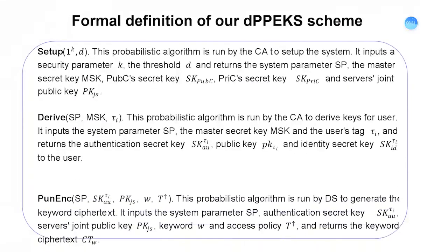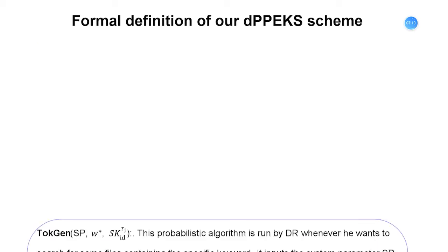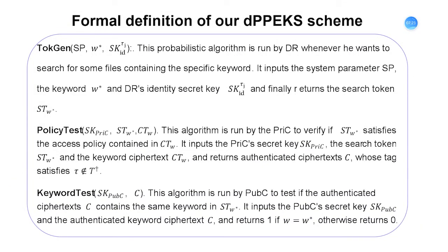We give the formal definition of our DPPKS scheme. There are six algorithms. The first is setup, run by the central authority to set up the system. The second is derive, also run by the CA to derive keys for each user. The third is puncture encryption, run by the data sender to generate the keyword ciphertext. The fourth is token generation, run by the data receiver whenever he wants to search for files containing a specific keyword. The fifth is policy test, run by the private cloud to verify if the search tokens satisfy the access policy in the ciphertext. Finally, keyword test is run by the public cloud to test if the authenticated ciphertext contains the same keyword as in the search token.